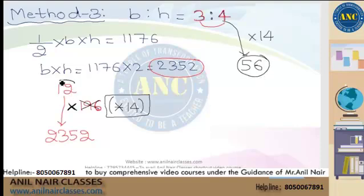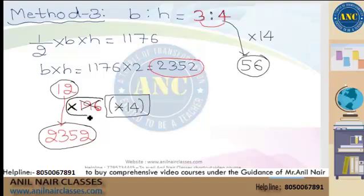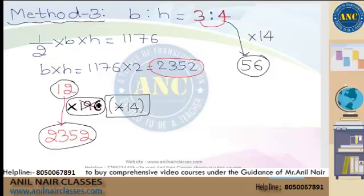In simple terms: 12 is becoming 2352. The multiplying factor is 2352 divided by 12 = 196. Because this is an area question (square units), take the square root to get the actual multiplying factor: square root of 196 = 14. For volume questions, take the cube root of the multiplying factor you get. That gives you the original multiplying factor.